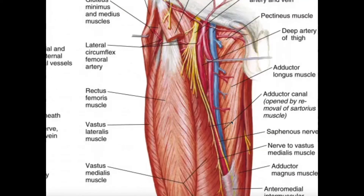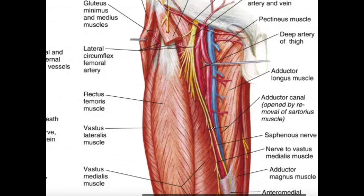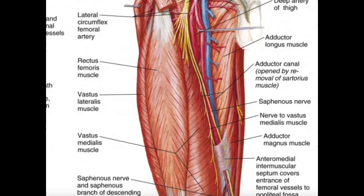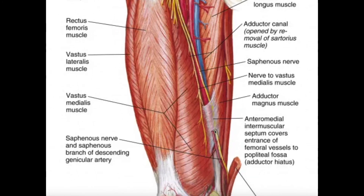These vessels are moving down through the femoral triangle, and right here is where the opening of the adductor canal exists, because this is where the sartorius would cross over the adductor longus muscle. They go down this canal, and here's your tendon of the adductor magnus muscle, and then this hole right here would be the end of it — where the adductor hiatus is.